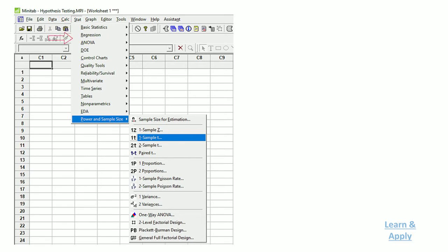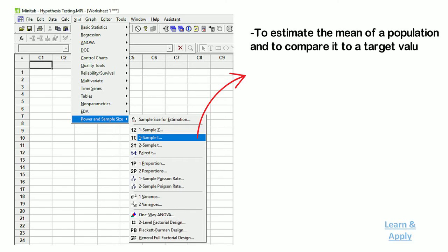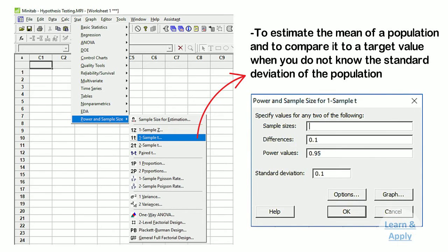First, select Stat, Power and Sample Size, and then 1-Sample t-test. He used a 1-sample t-test because it is used to estimate the mean of a population and to compare it to a target value or reference value when you do not know the standard deviation of the population. Second, specify the value for differences as 0.1. Third, in power values, enter 0.95. Fourth, in standard deviation, enter the sample standard deviation. Let's say it is 0.1.